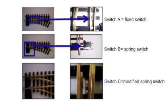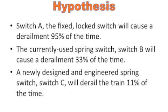This experiment tests a mechanical solution to this problem with the spring switch by using an added spring here to counteract the spring in the switch stand, allowing trains traveling at slower speeds with lighter loads to pass through. Switch A will cause a derailment 95% of the time.